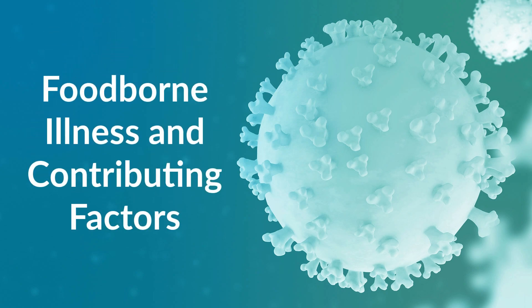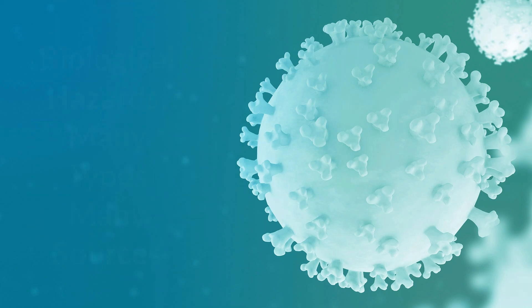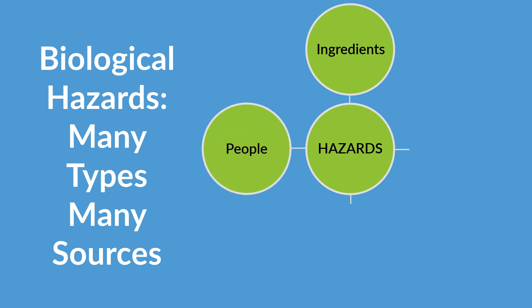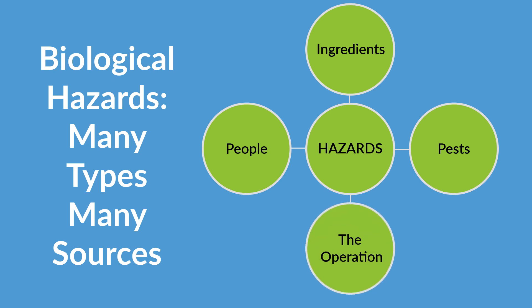Let's look at foodborne illness and some of the contributing factors that might lead to such conditions. It's a little bit overwhelming at first. There are many possible sources that could impact the safety of that food: the ingredients that we might use in food processing, the people working not only to harvest the crop but also to process it in the facility, any pests that might gain access to the facility and to the product, such as rodents, insects, or others, and of course the operation itself. Sometimes the equipment and processes that we use can actually contribute to contamination.